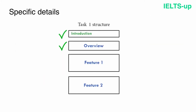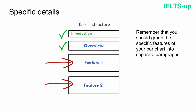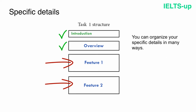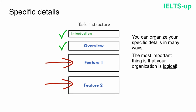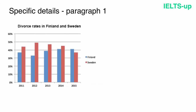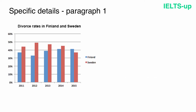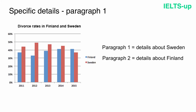That's all with our general overview paragraph. Now we have to provide specific details. Group the specific features of your bar chart into separate paragraphs so your writing is coherent and you won't lose points for the coherence and cohesion criterion. The most important thing is that your organization is logical — ideally two or three separate paragraphs. Since we have two countries, the simplest way is to describe each country's trend in a separate paragraph: Sweden first, then Finland.